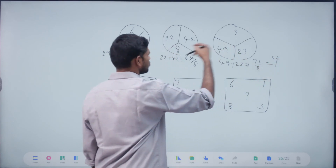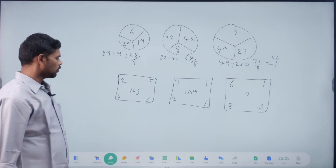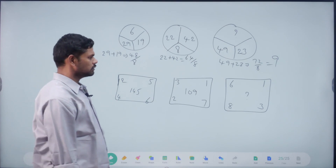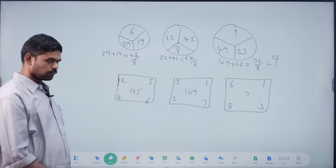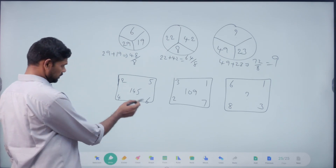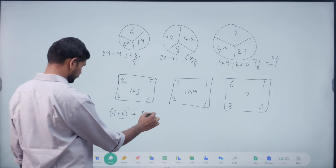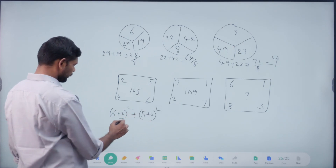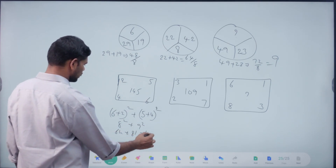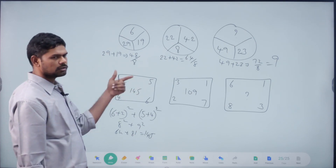And answer? Right, exactly. Satisfied — yes, equal answer. 25, 46, 145. 3, 1, 2, 7, 109. 6, 1, 8, 3, question mark. 11 square plus 6. Right. So, 6 plus 2 whole square plus 5 plus 4 = 9 square. 8 square plus 9 square. 64 plus 81 = 145. Right, exactly. Corner numbers square — sum of corner numbers and square.